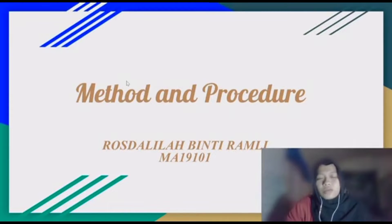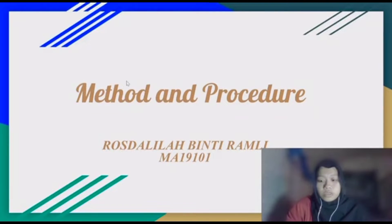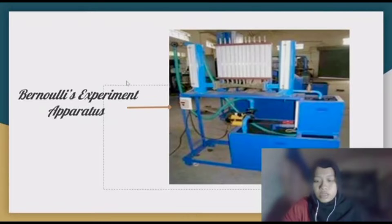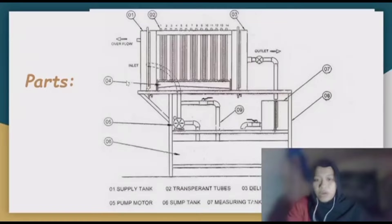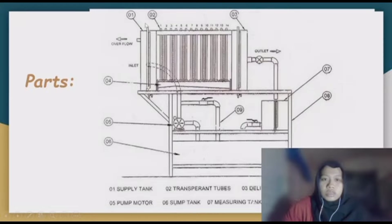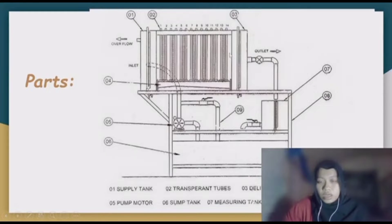Assalamualaikum warahmatullahi wabarakatuh. My name is Roshtarilla Benchiramli and my ID is MA19101. I am responsible to present the method and procedure part of this experiment. This is the apparatus needed for the Bernoulli experiment. The parts include the supply tank, the piezometer also known as pressure-measuring tubes, the delivery tank and outlet where water will flow through, and the measuring tank.